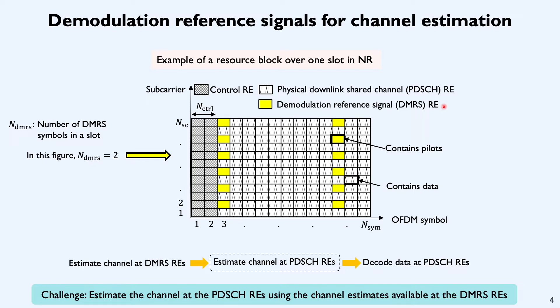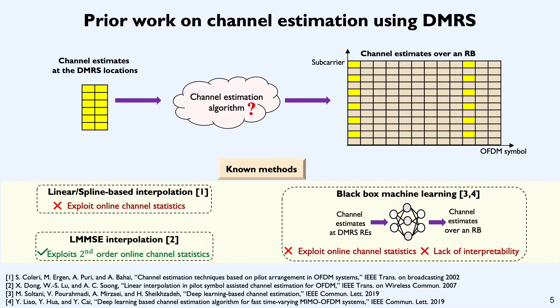When pilots are sent over DMRS REs, the receiver can first estimate the channel at the DMRS REs, and using this information, it can interpolate or use some kind of algorithm to estimate the channel at the PDSCH REs. Once we have information about the channel estimates at the PDSCH REs, similar detection becomes a straightforward problem. So, the main challenge which is going to be the focus of this work is on how to estimate the channel over PDSCH as well as DMRS REs using just the channel estimates at the DMRS REs.